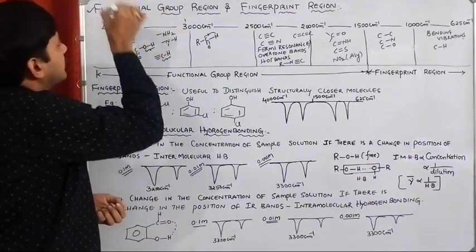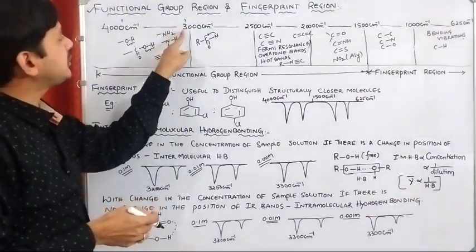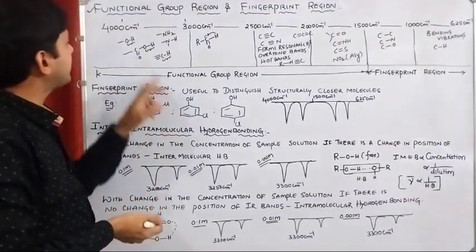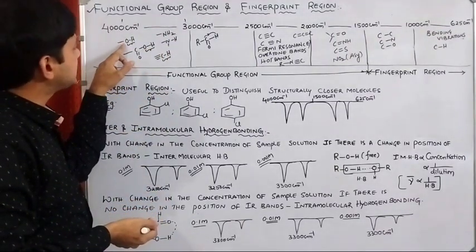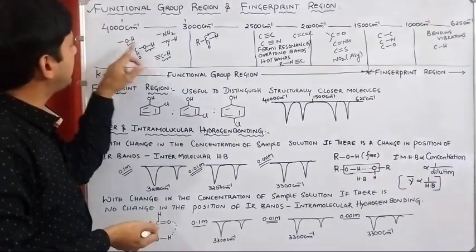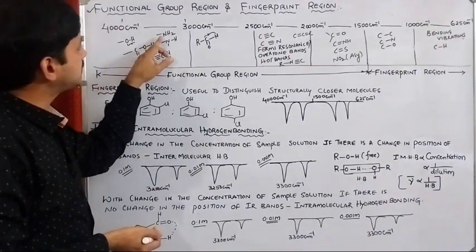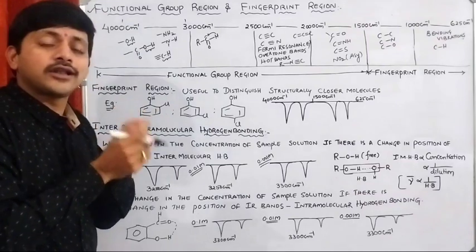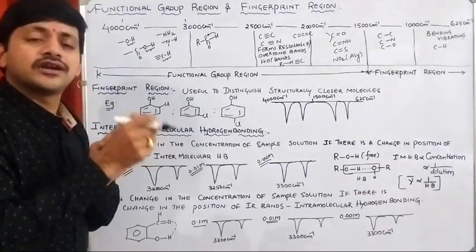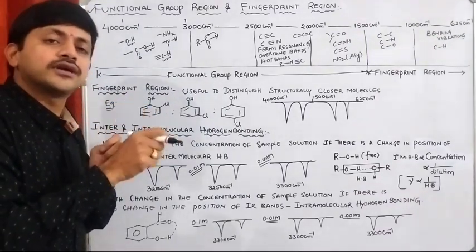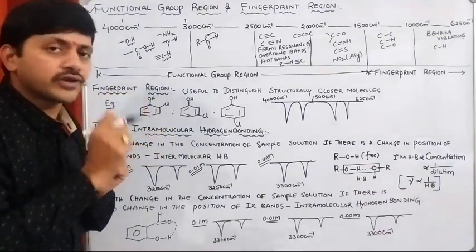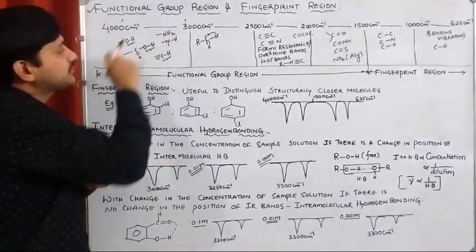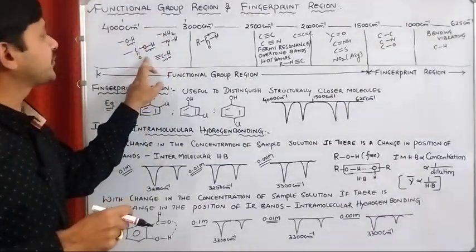In the region between 3000 to 4000 cm⁻¹, what we are observing are the stretching frequencies of the OH group of alcohol, OH of carboxylic acid, and NH group. We have seen that the values are 3100 to 3300, 3200 to 3400, and so on. All the stretching frequencies of these bonds are observed in this range.